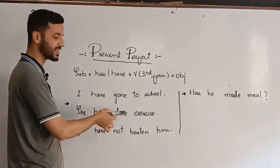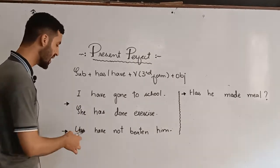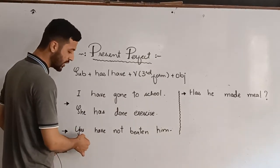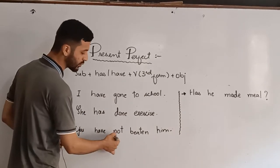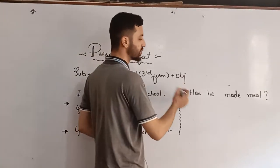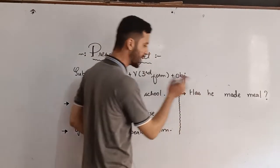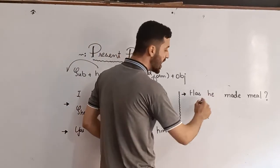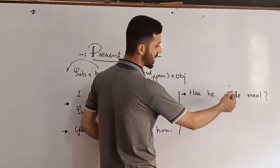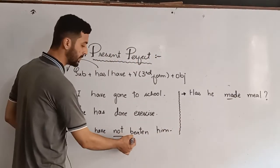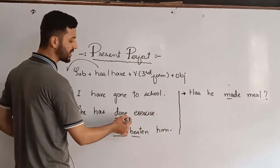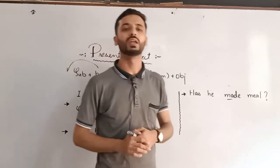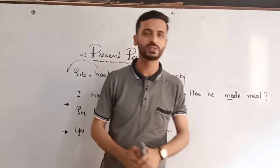You have to explain that in one sentence. If you are writing a verb, you have not bitten him. So if you have a question, have — we will take the start. Has he made a meal? Make — third form is made. Beat — third form is bitten. Do — third form is done. Go — third form is gone. Remember that the third form is used. Thank you so much, Allah Hafiz.